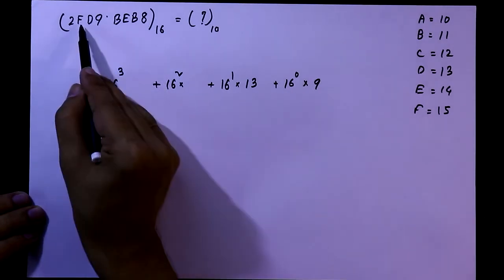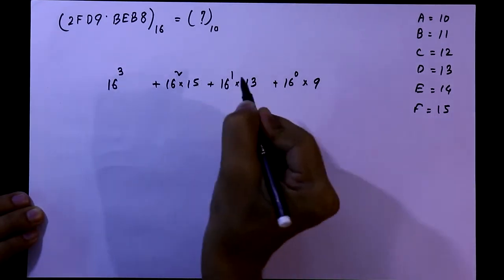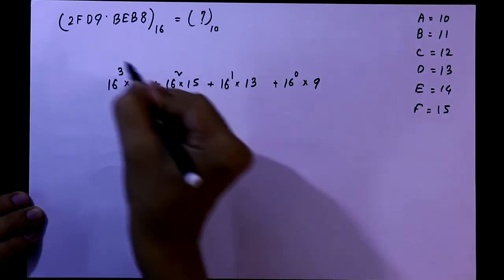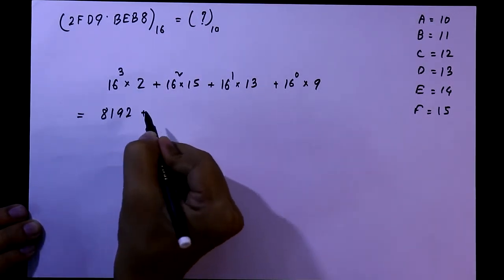Then it is F, F means it is 15, and the last part is 2. Now we have to add up this.